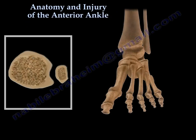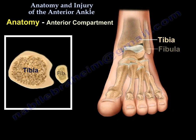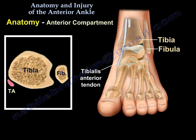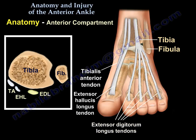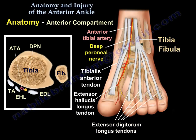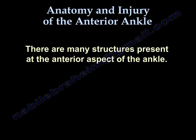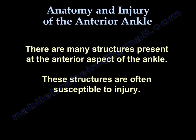Ankle pain complete overview: anatomy and injury of the anterior ankle. Anatomy of the anterior compartment includes the tibia and the fibula. It also includes the tibialis anterior tendon, the extensor hallucis longus tendon, and the extensor digitorum longus tendon. Here you can see the anterior tibial artery and the deep peroneal nerve, as well as the superior and inferior extensor retinaculum.